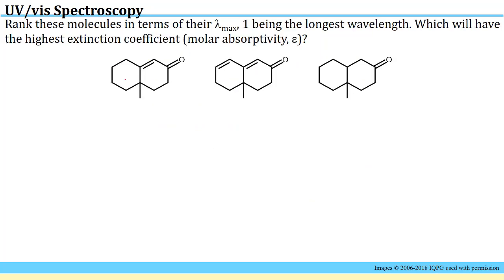Here's a relatively similar question to the previous one. It's asking us to rank these molecules in terms of their lambda max, one being the longest wavelength. Remember that lambda max is just the wavelength of maximum absorption, so that should be the energy corresponding to the pi pi star transition but now expressed in terms of wavelength instead of energy units.